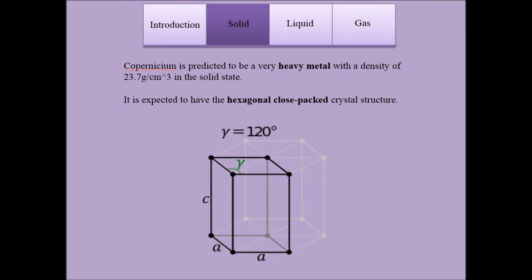Copernicium is predicted to be a very heavy metal with a density of 23.7 grams per centimeter cubed in a solid state. It is expected to have the hexagonal closed-packed crystal structure.